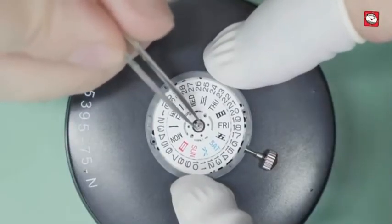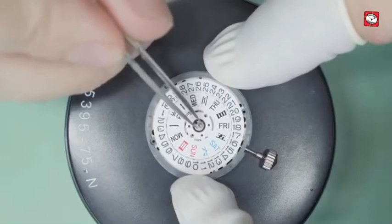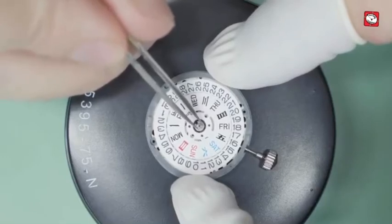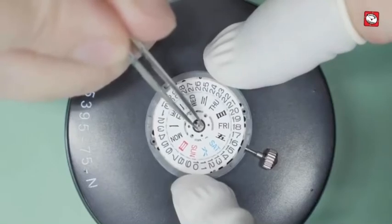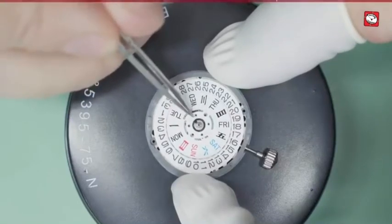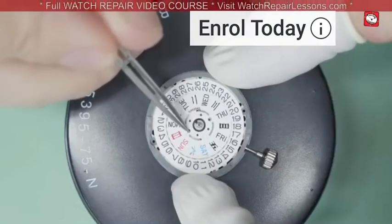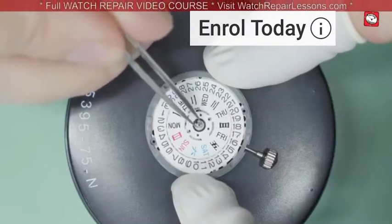Notice how the day disk seems to have a lot of movement. This is definitely a concern and suggests that the Canon Pinion is not seated correctly on the center wheel arbor. This would actually explain the symptoms that we've already observed.